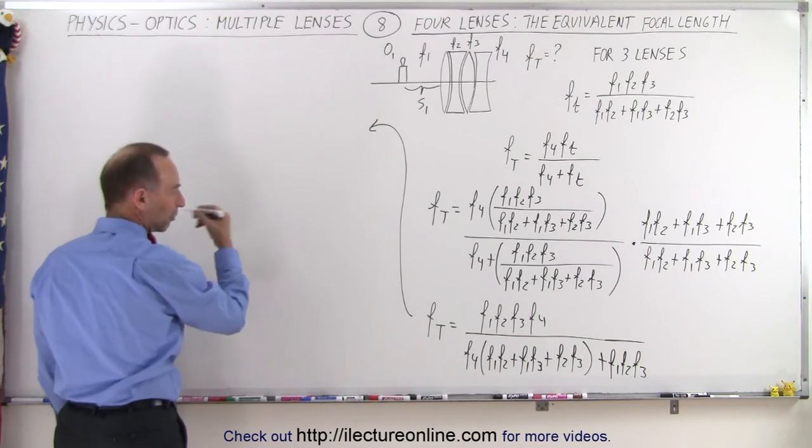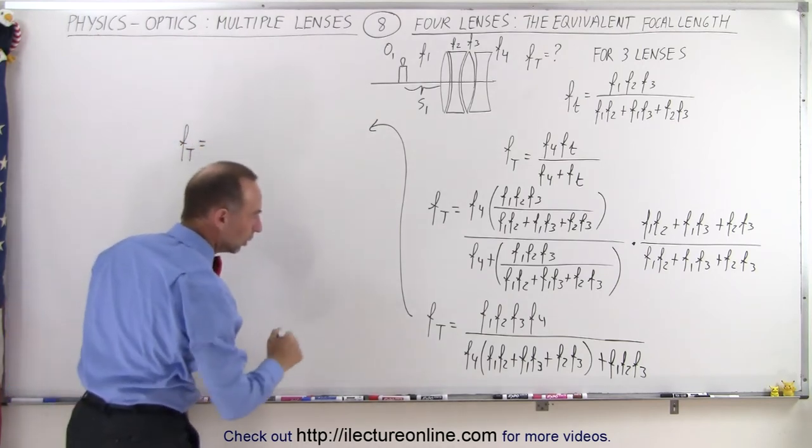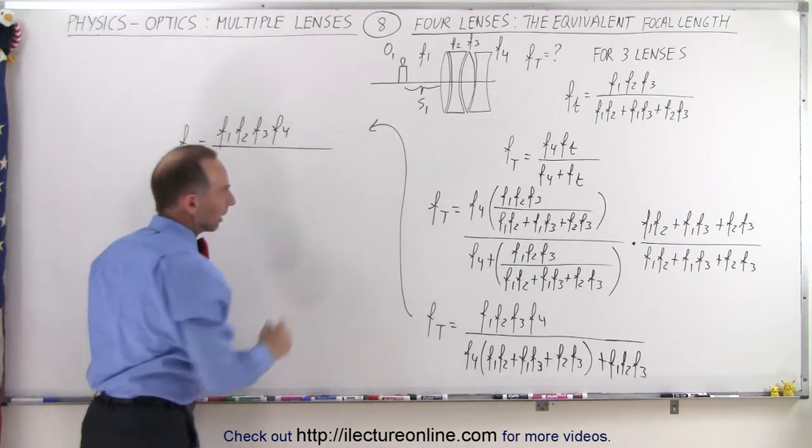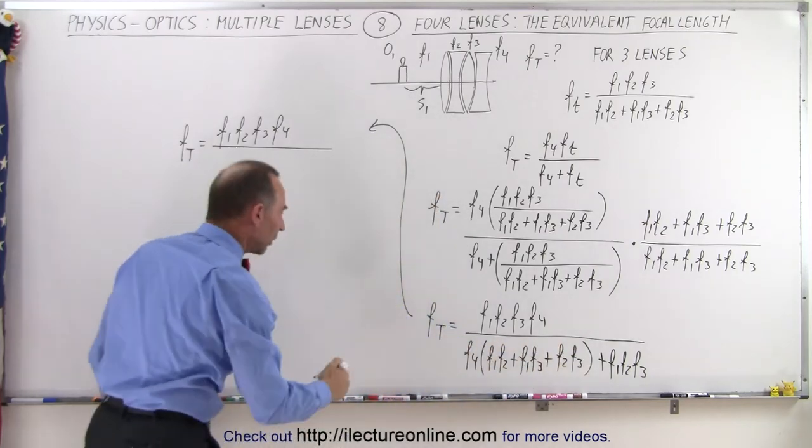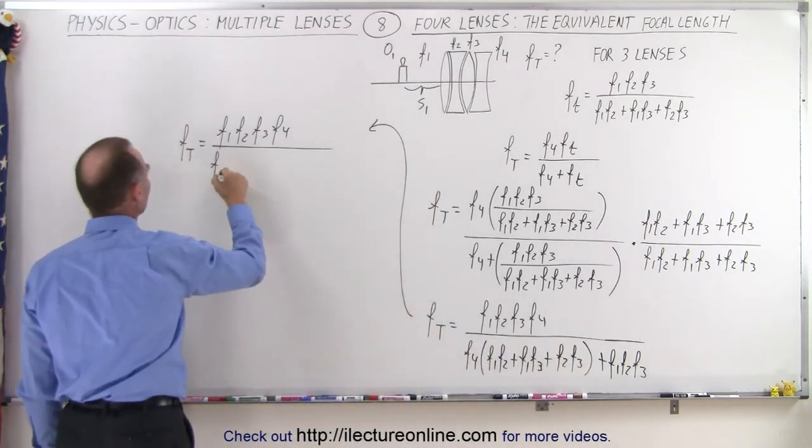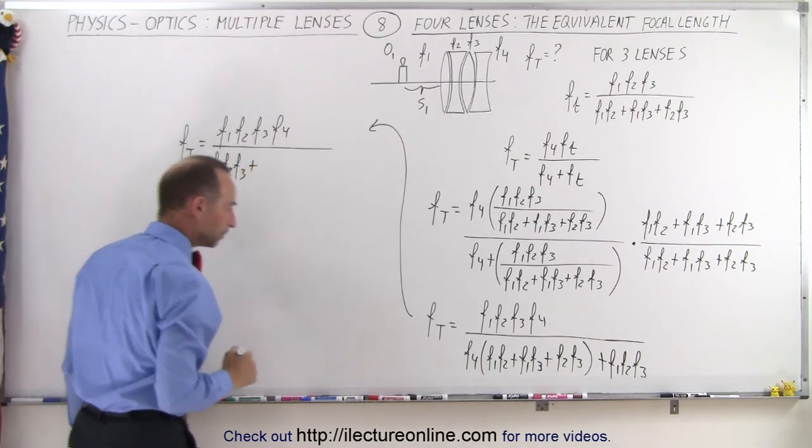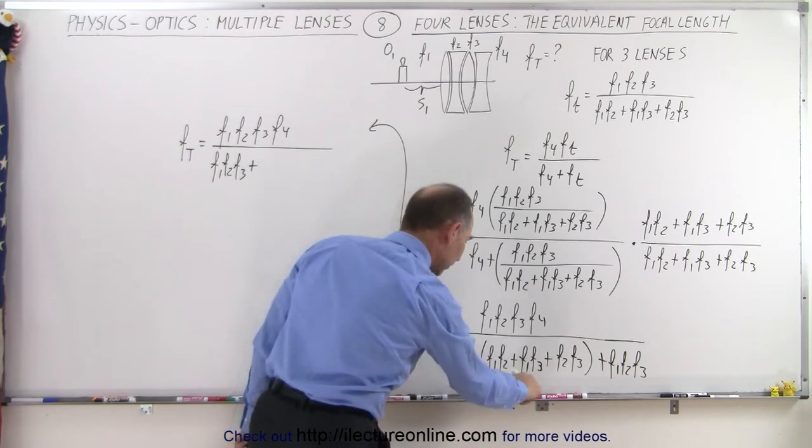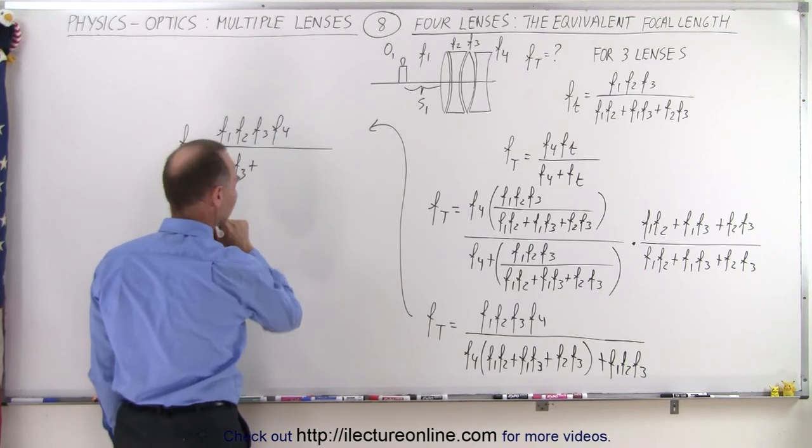we end up with the equation for four lenses, that the equivalent or total focal length equals, in the numerator we have the focal length of all four lenses. In the denominator we end up with, let's put it in the correct order, so we have F1 F2 F3 plus F1 F2 F4 plus F1 F3 F4.